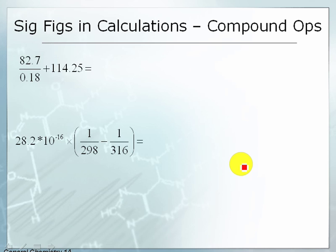Okay, here's some that go the other way, but it's going to be the same process. The way this problem here is written first, we're going to do the multiplication division first, and then addition. Here we have 2 sig figs for the 0.18, 3 sig figs for the 82.7, and when I do that division, it comes out as 459.44, and I still need to add the 114.25 to that.